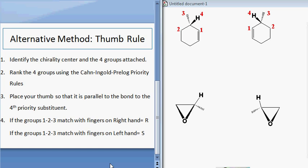The third rule is what is different. Perhaps you're uncomfortable redrawing, or maybe the bond to the fourth priority substituent is parallel to the paper. In this case, you can place your thumb so that it is parallel to the bond to the fourth priority substituent.